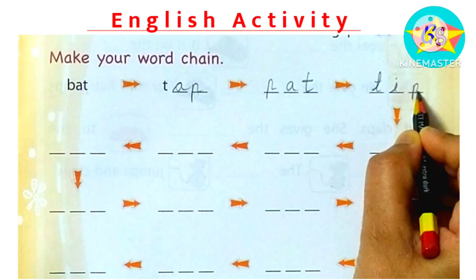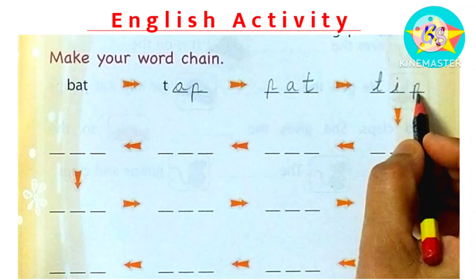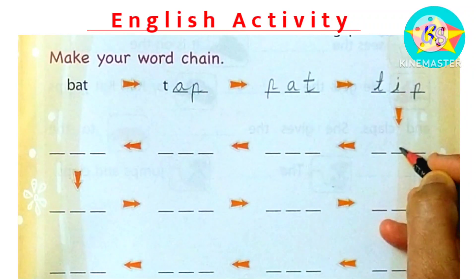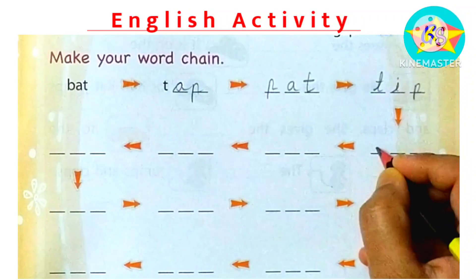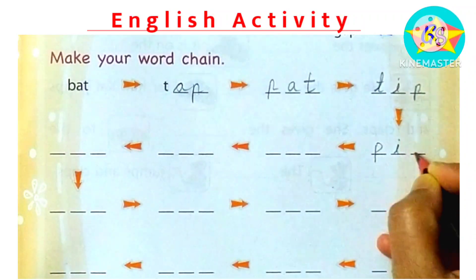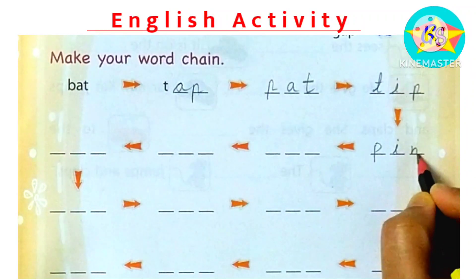So we have to think from P. What can we write from P? Because we have to go down here. So we can write PIN. PIN. Ending is N.